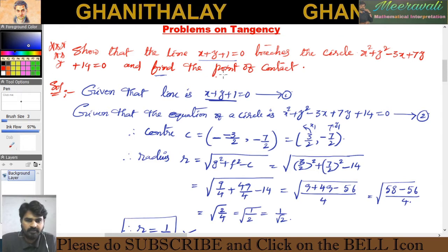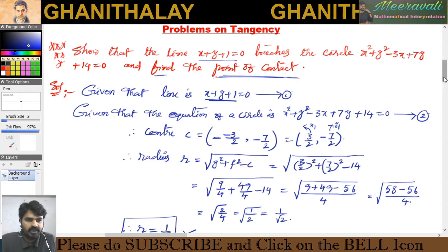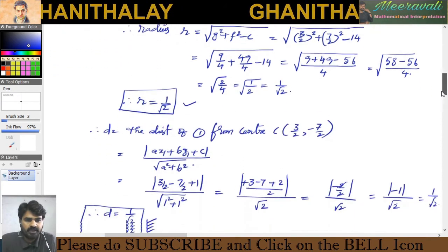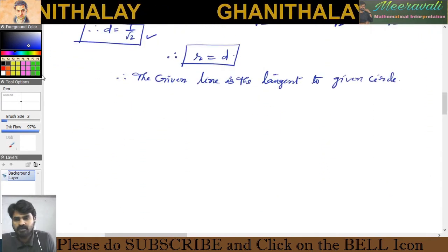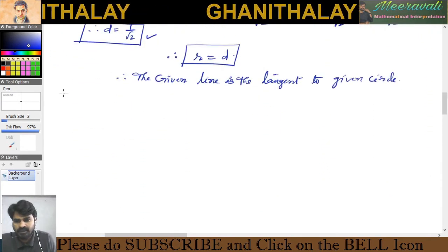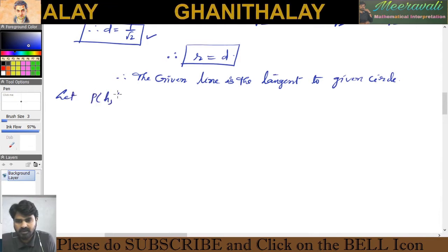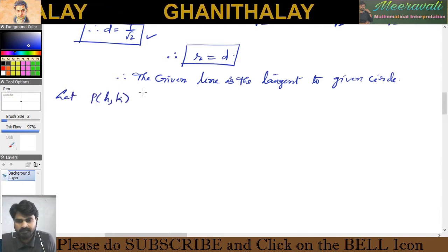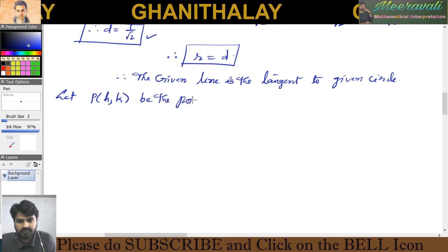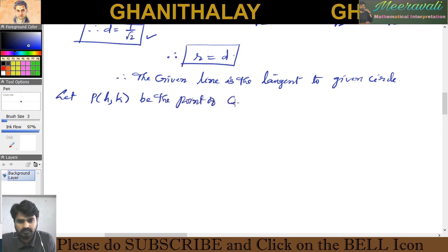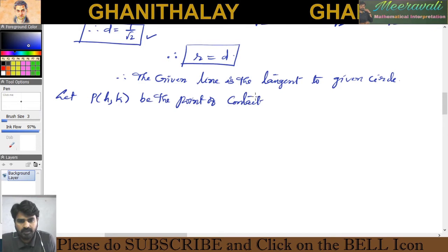Now we are going to find the point of contact. Let P (h, k) be the point of contact. The point of contact is the foot of the perpendicular from the center to the tangent line.